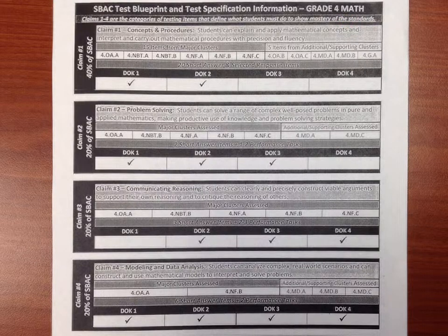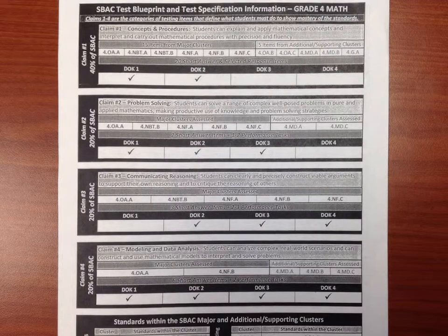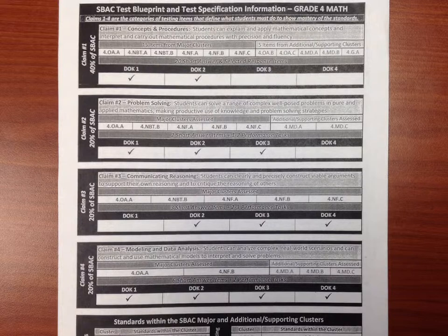Now let's talk about how this page is laid out and where I got the information from. This chart was built using the Mathematics Summative Assessment Blueprint, which is found on SBAC's webpage. If you look at it, it's very extensive, very long, and somewhat hard to read. This page summarizes those findings for you. So if you want to get deeper, go ahead and check that out.